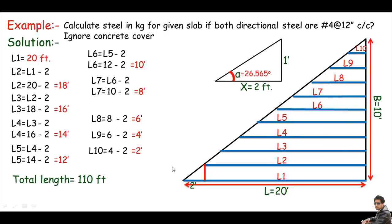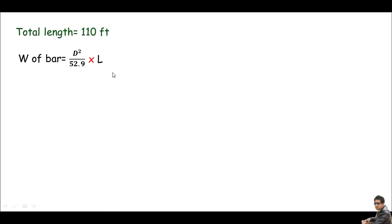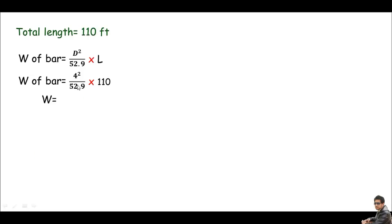Now I'll calculate the weight using the standard formula: weight of bar = d² / 52.9, which gives weight in kg per foot. Multiplying by the total length: with number four bars, weight = (4² / 52.9) × 110 = 0.302 × 110 = 33.2 kg.